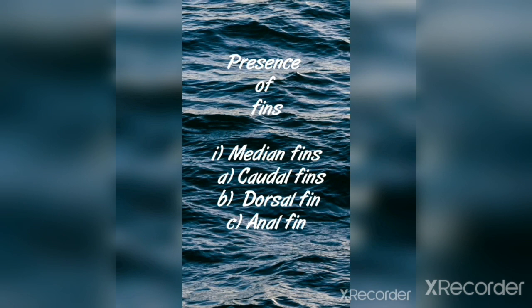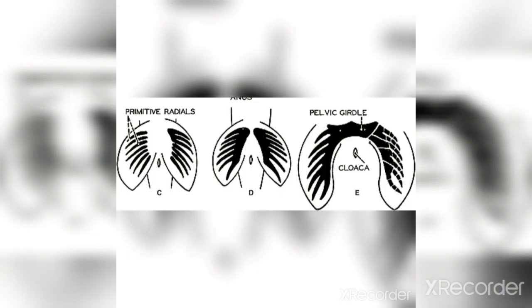The second type is median fins. Median fins are three in number: the caudal fin, the dorsal fin, and the anal fin. The caudal fin and tail push the body forward and function like a rudder — a rudder is a flat piece of wood or metal at the back of a boat or aircraft, moved from side to side to control the direction of travel. In fishes, it helps in changing direction during swimming.